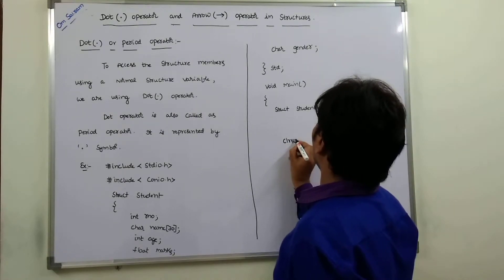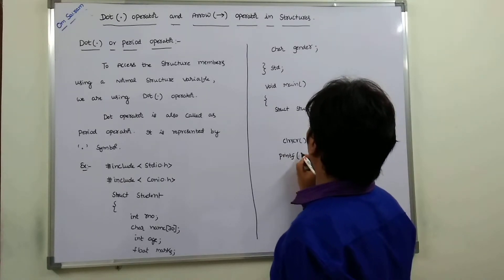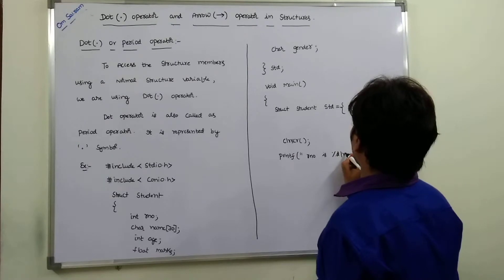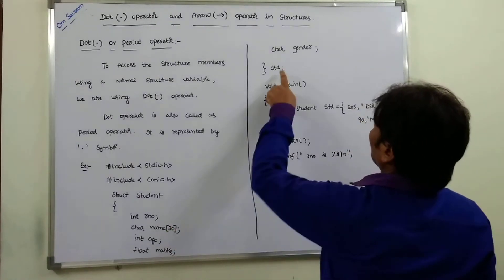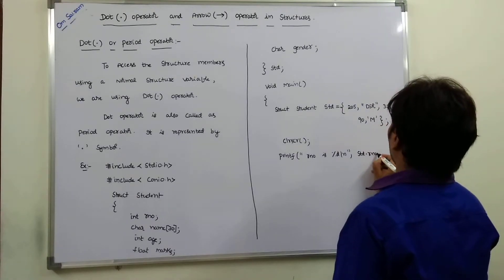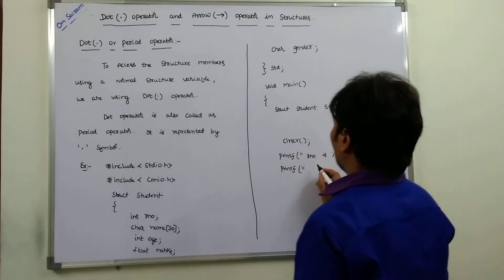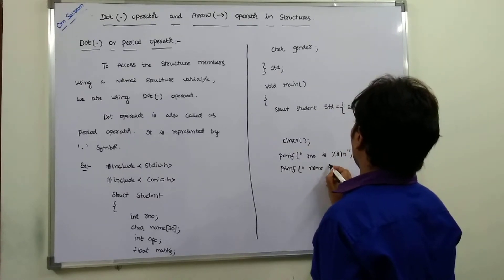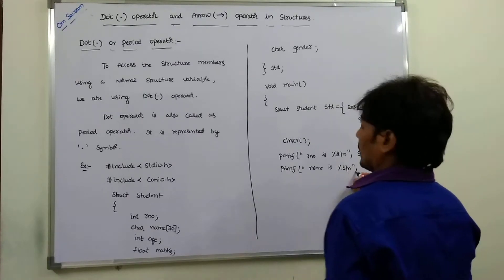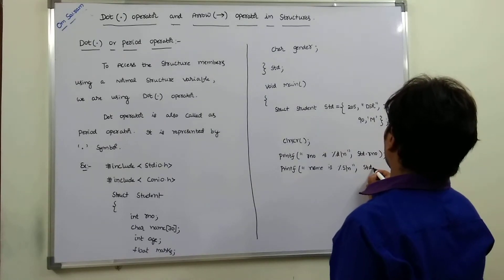Next, clrscr. We print the roll number using printf with format %d and newline. How are we accessing the roll number? Using the structure variable dot member name: std.roll_number. Next, to print the name using printf with %s and newline, we access it as std.name.